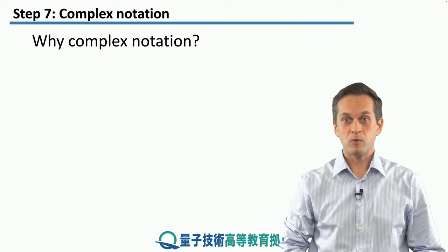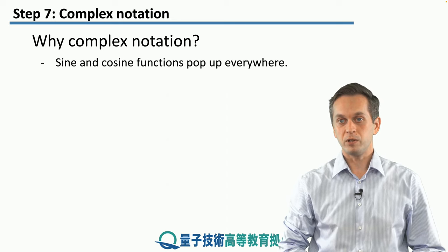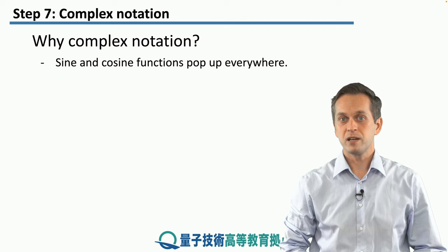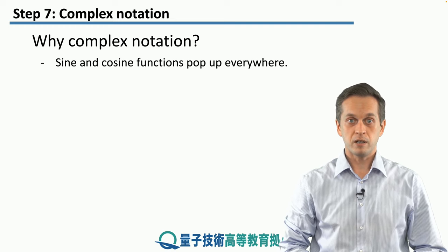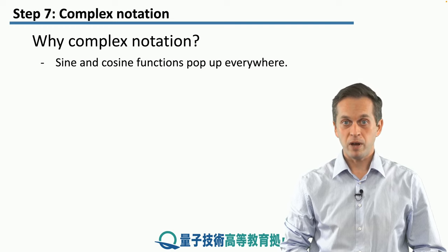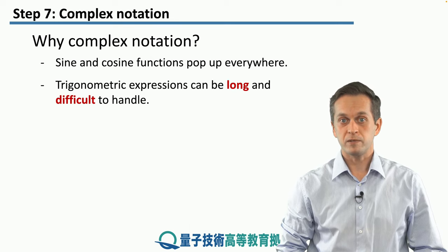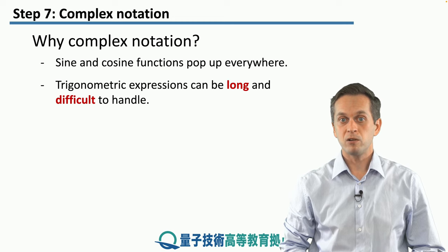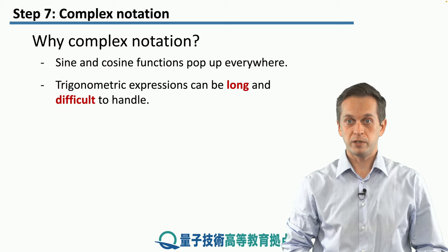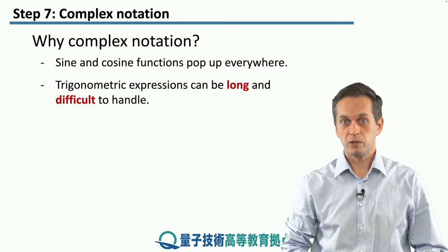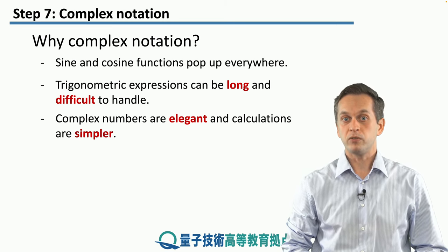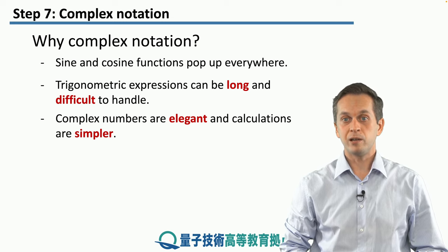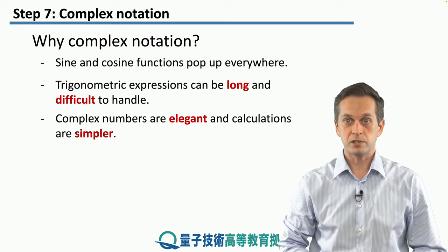First we want to ask the question: why do we even need complex notation? After all, sines and cosines pop up everywhere when we talk about waves. The problem with sines and cosines is that they're very general — they can describe many complicated shapes just by superposing many sines and cosines together. However, trigonometric expressions can get very long very quickly, and therefore the calculations that include them can get very difficult and cumbersome to handle. That is why we are switching to complex notation. Complex numbers are a very elegant way of talking about trigonometric functions and therefore they simplify a lot of the mathematics behind calculations involving waves.